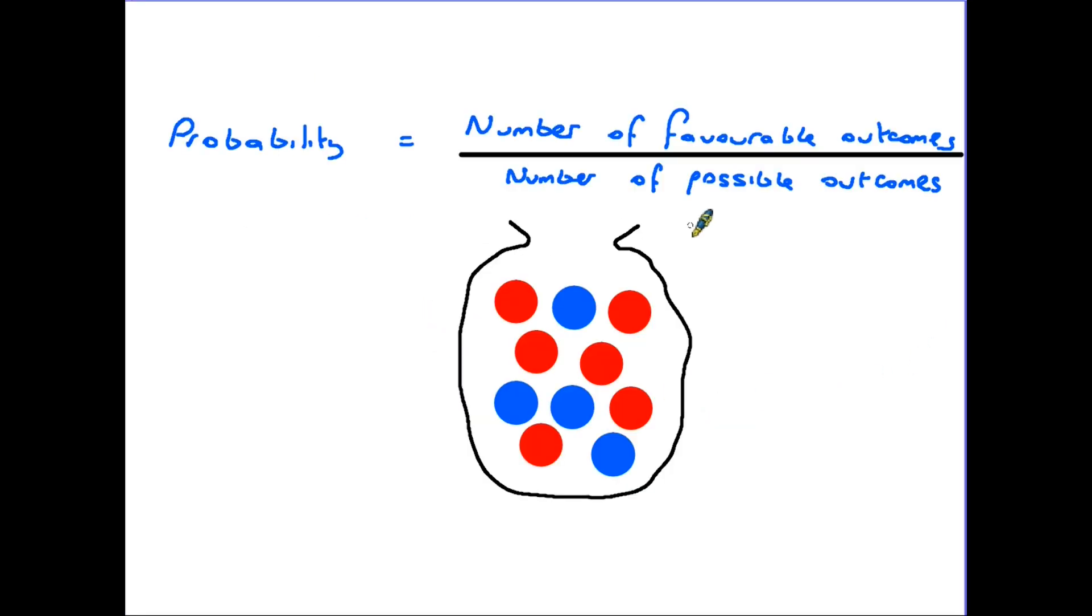Sometimes we see probability written as a formula although the wording may seem a little heavy. The probability of something happening is said to be the number of favourable outcomes divided by the number of possible outcomes. Let's have a look at this more closely.